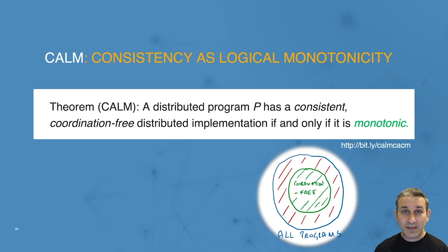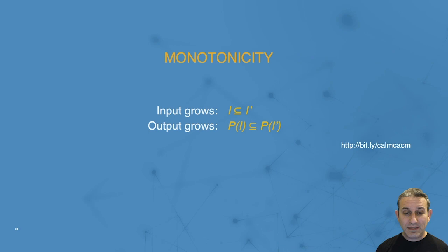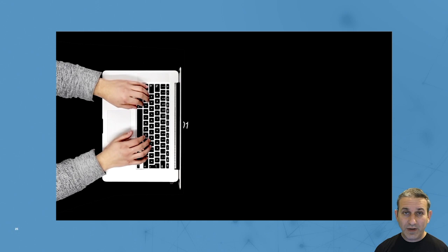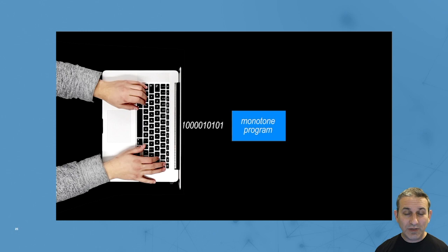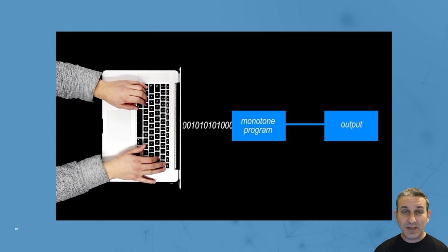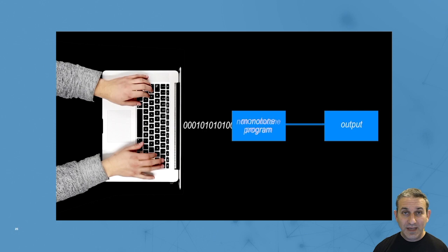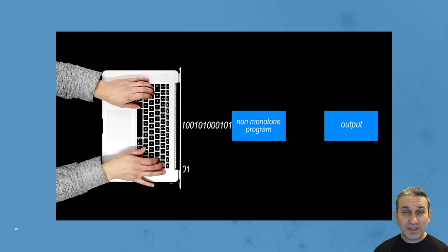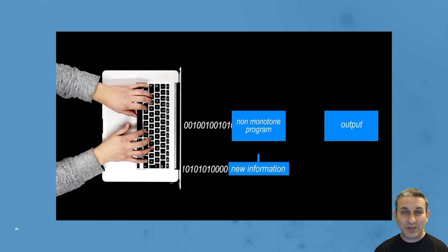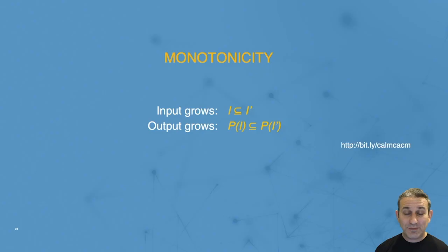What do we mean when we say a program is monotonic? Monotonicity is the property that if the input to the program grows, then the output grows — and in particular, if you're running a program and it gets more input, it will only produce more output and will never need to retract an output it gave for a subset of the input. Non-monotonic programs have to wait until they get their complete inputs to decide what legal outputs are. By contrast, monotonic programs can start producing outputs immediately when they get inputs. Intuitively, this is why monotonic programs can run without coordination — they don't have to wait for anyone.